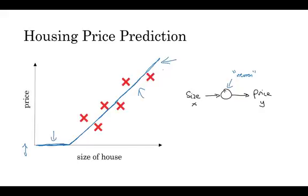And all that the neuron does is it inputs the size, computes this linear function, takes a max of zero, and then outputs the estimated price. And by the way, in the neural network literature, you see this function a lot. This function which goes to zero at some time, and then it takes off as a straight line. This function is called a ReLU function, which stands for